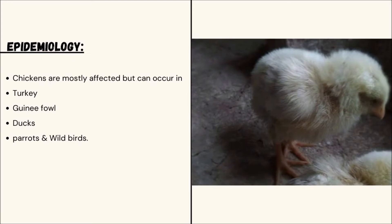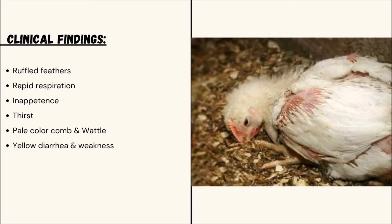Epidemiology: Chickens are mostly affected but foul typhoid can also occur in turkeys, guinea fowl, ducks, parrots, and wild birds.